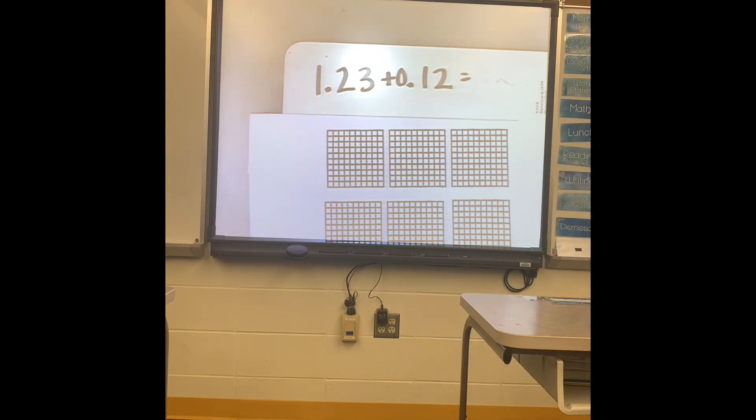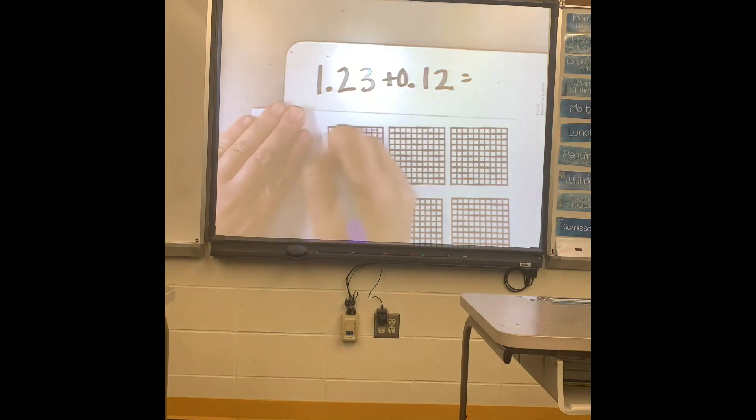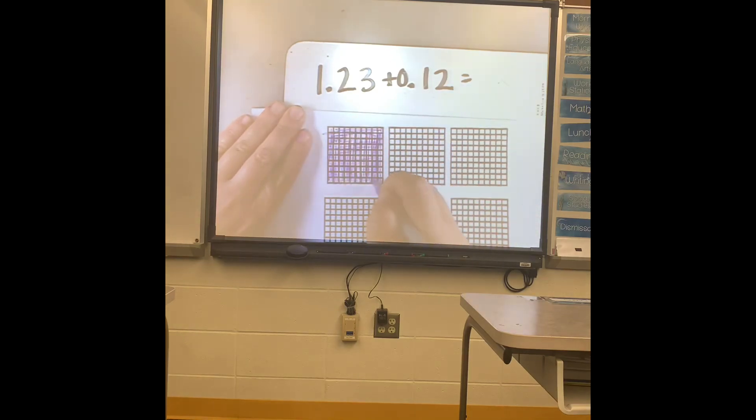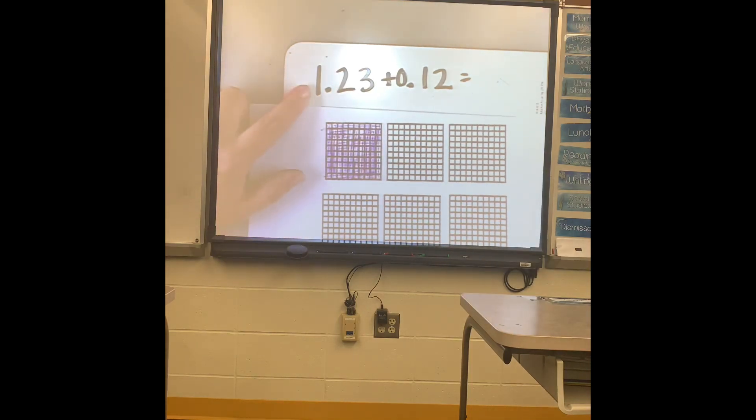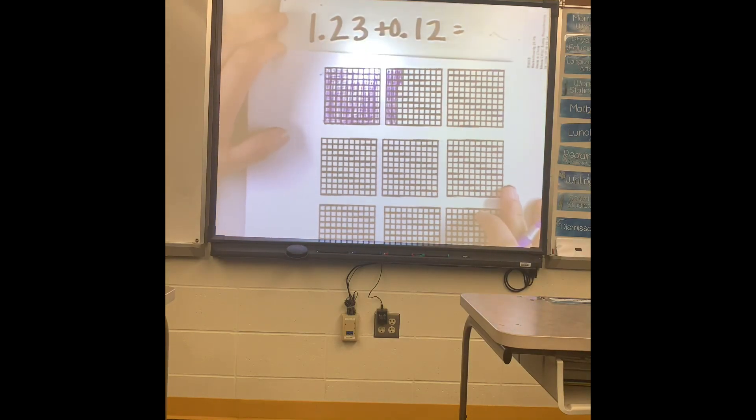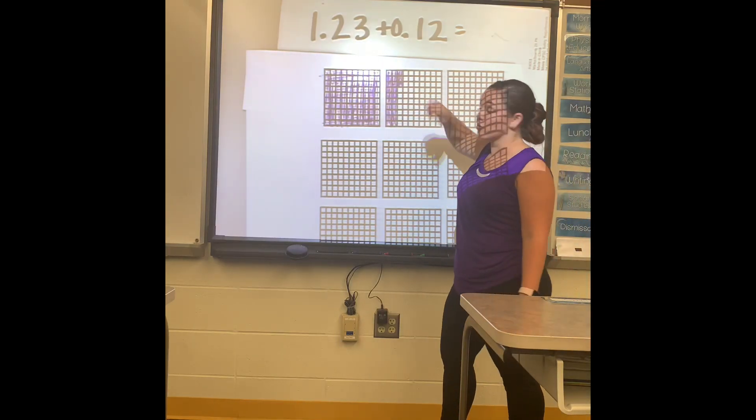So I'm going to shade in one full grid and it doesn't have to be pretty. You just have to make sure that you remember what you shaded in. So there's one for my one hundred and then twenty-three. So here's ten, here is twenty, and then three. So I want you to see that I shaded in one whole and then twenty-three.